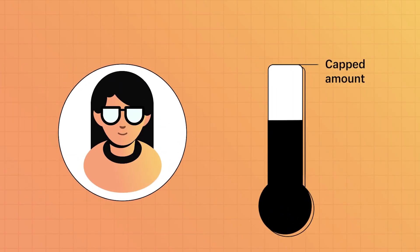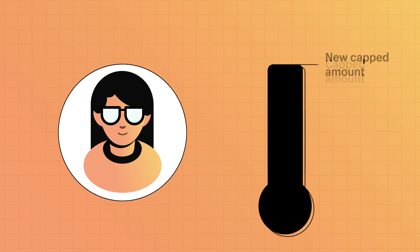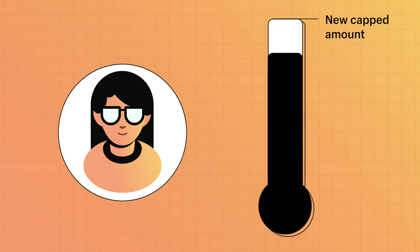First, they might have capped amounts. Capped amounts make it so that you can't go over the maximum threshold in a certain billing period. If Priya hits the maximum of her threshold, she'll need to agree to a new usage charge. This prevents her from being charged for anything over and above the capped amount.